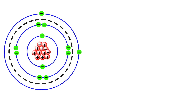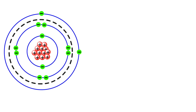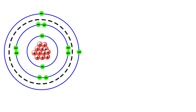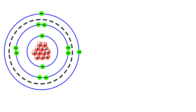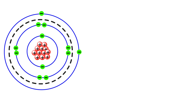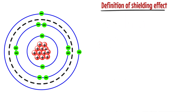Inner electrons — those located between the nucleus and outer electrons — lessen the attraction from the nucleus to the outermost electrons. Some attraction from the nucleus doesn't reach the outermost electrons because some attraction is neutralized by inner electrons. This process of inner electrons lessening attraction from the nucleus, causing outermost electrons to feel less attraction, is known as shielding effect.